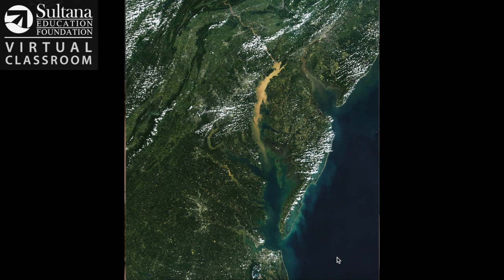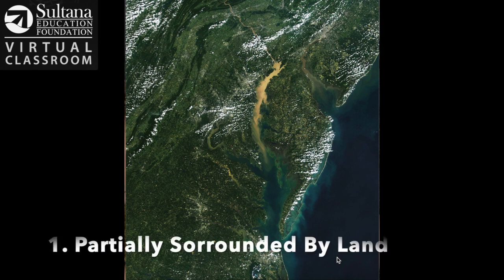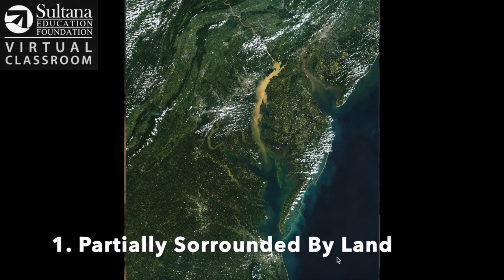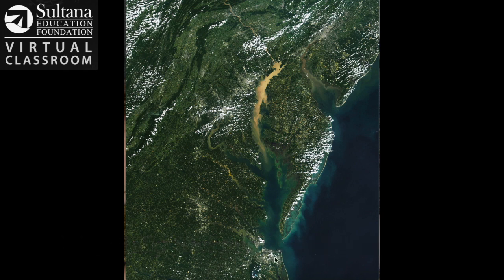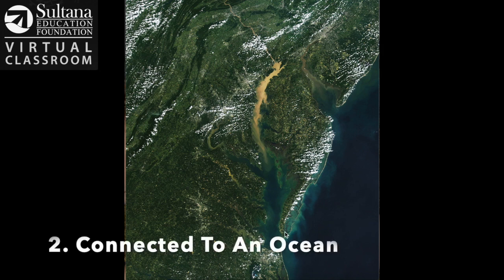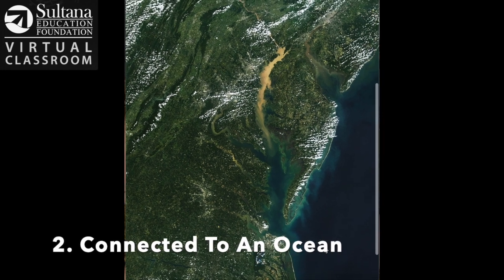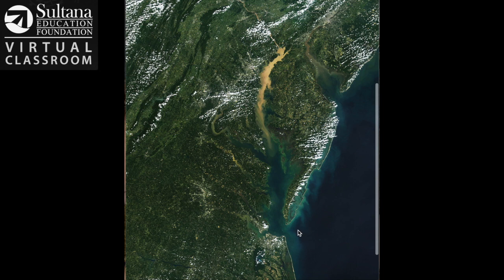The first characteristic of a bay is that it's partially surrounded by land. If you watch my cursor you can see that I can trace all the way around the Chesapeake Bay. This brings us to our second characteristic: this dark blue area out here is the Atlantic Ocean, and you can see the Chesapeake Bay and the Atlantic Ocean are connected, which means that saltwater from the ocean can come into the Chesapeake Bay.